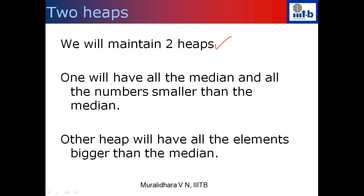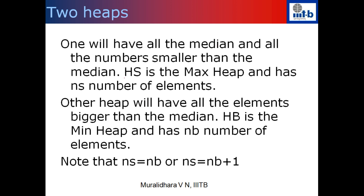The idea is to use two heaps. Since we need the median, we keep the median and all numbers smaller than the median in one heap, and in the second heap we keep all elements which are bigger than the median. The first heap, which tracks all numbers smaller than or equal to the median (including the median itself), we will maintain as a max-heap — we'll see why shortly. We denote the number of elements in it as ns. The other heap, for numbers greater than the median, is called the big heap hb.